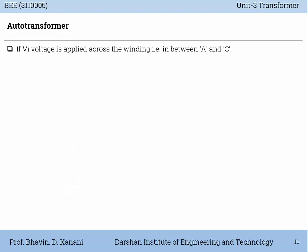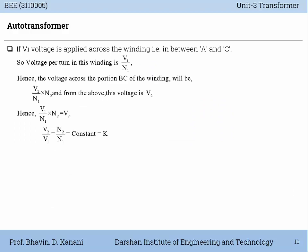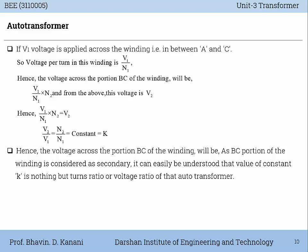If voltage V1 is applied across the winding between A and C, then voltage per turn in this winding is V1/N1. Hence the voltage across the portion BC of the winding will be (V1/N1) × N2, and this voltage is V2. Hence V1/N1 × N2 = V2, so V2/V1 = N2/N1, which is a constant designated by K. The value of constant K is the turns ratio or voltage ratio of the auto transformer. Therefore, V2/V1 or N2/N1 is known as the voltage ratio or turns ratio of the auto transformer.